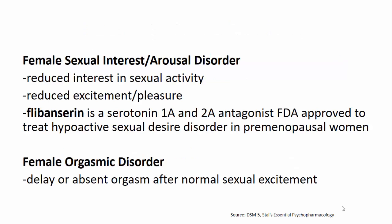Female sexual interest and arousal disorder is kind of the flip side of asexualism. It is defined by a reduced interest in sexual activity and reduced excitement and pleasure in activities that would normally be sexually arousing. We do have an FDA-approved treatment for this: flibanserin, which is a serotonin-1A/2A antagonist used to treat this in premenopausal women. Bupropion is also used off-label for sexual arousal disorders.